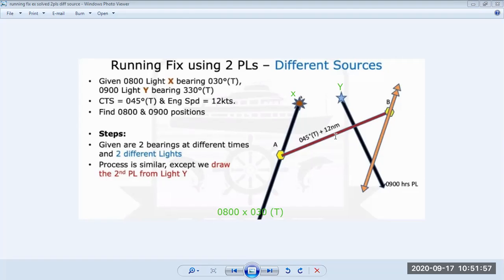So we plot the first two position lines, we plot the course and distance. Wherever we get point B, from point B we transfer the 0800 position line marked with double arrows, and wherever it cuts that is our 0900 position.